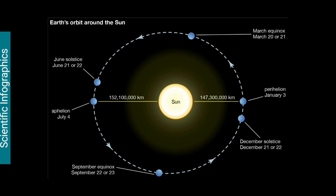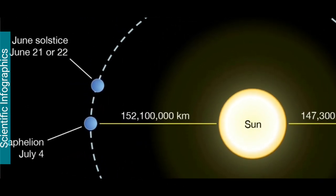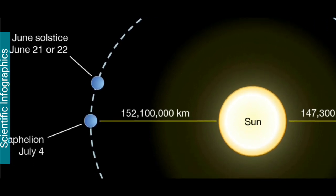Conversely, the Earth is farthest away from the Sun, at the aphelion point, two weeks after the June solstice, when the Northern Hemisphere is enjoying warm summer months.